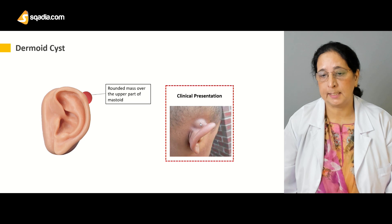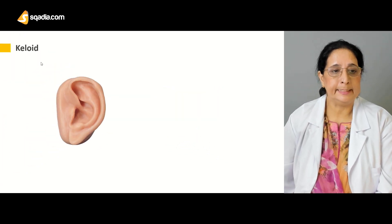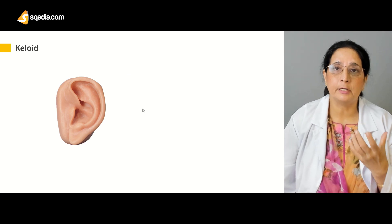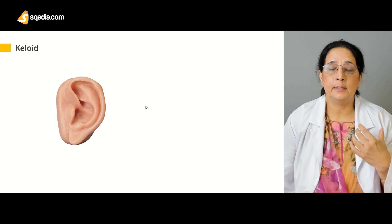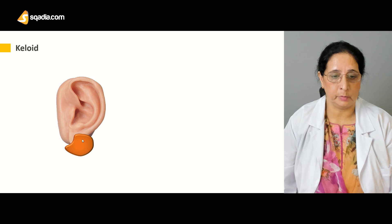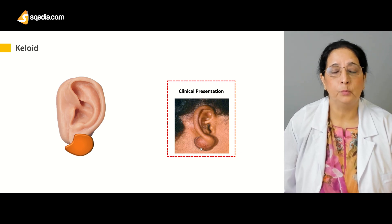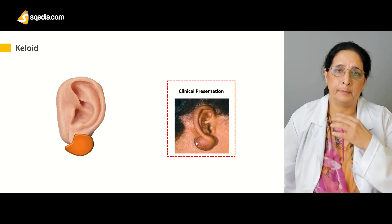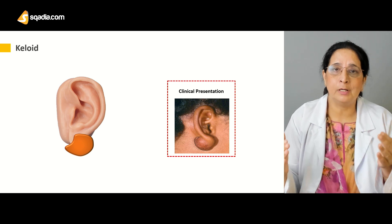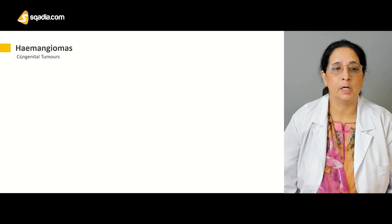Then the keloid — keloid is the scar tissue formed after the healing of a wound. It is a raised scar tissue that stays and represents an overgrowth of scar tissue beyond the actual wound margins. Here you can see a very clear picture showing the keloid.